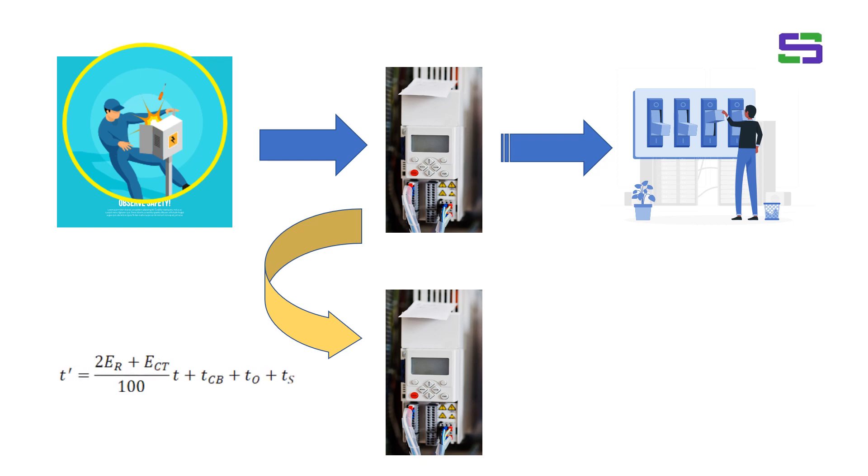To do that coordination, we need to follow this formula, this time grading. Time grading t dash equals to twice ER plus ECT into T by 100 plus TCB plus TO plus TS. This is the coordination formula between the two IDMT relays. IDMT means inverse definite minimum time. So how it will be coordinated? Let us understand the equation first.